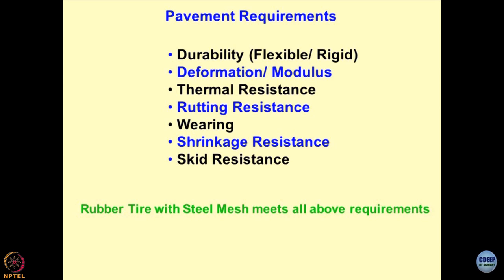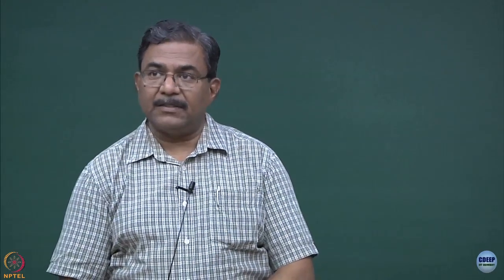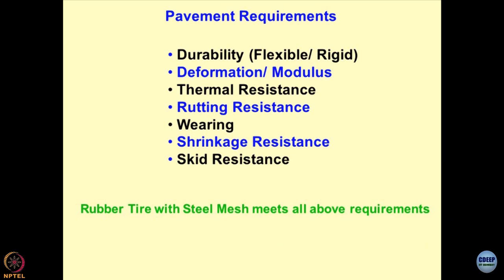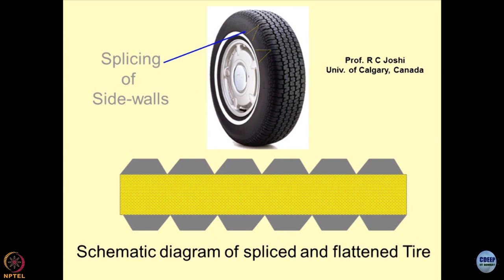The biggest problem in temperate climates is that due to very high temperatures, asphalt and bitumen melt — particularly in countries like India — and because of this melting, skid resistance is reduced, causing a lot of accidents on roads. Now I will show you one animation where you can appreciate how rubber tires with steel mesh can be utilized for creating different types of embankments, particularly for sports velodrums where vehicles are tested. These slides I have borrowed from Professor R.C. Joshi of the University of Calgary.